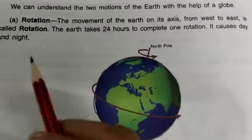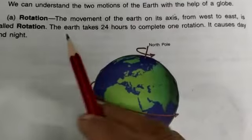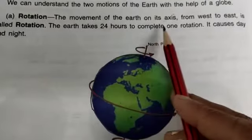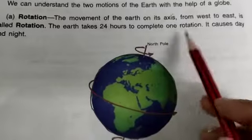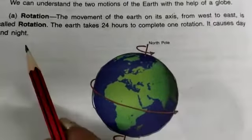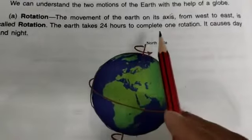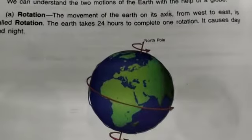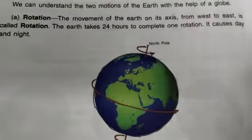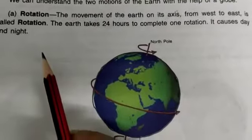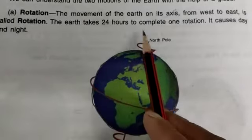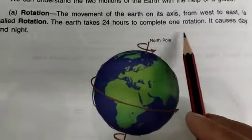What is rotation? The movement of the Earth on its axis from west to east is called rotation. The Earth takes 24 hours to complete one rotation.